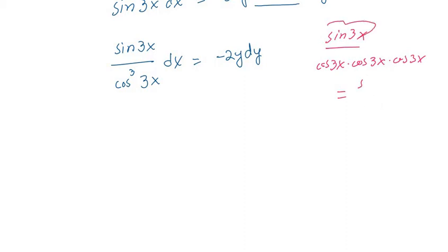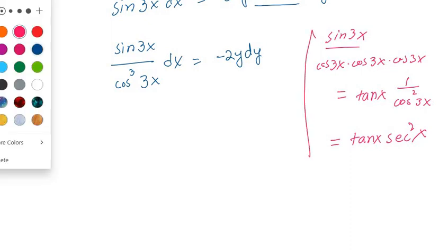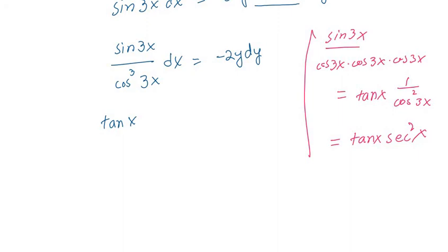You can take sin(3x) with one cos(3x) to form tan(3x), and 1 over cos²(3x) is secant squared(3x). So you can write tan(3x) · sec²(3x). Using that reasoning, I can rewrite this as tan(3x) · sec²(3x) dx equals minus 2y dy.